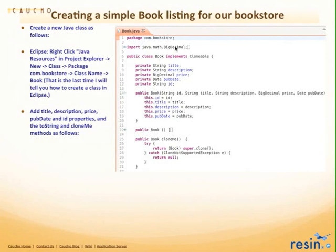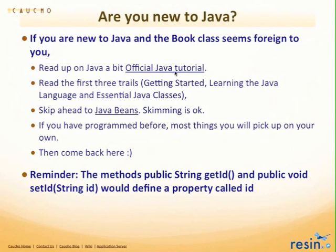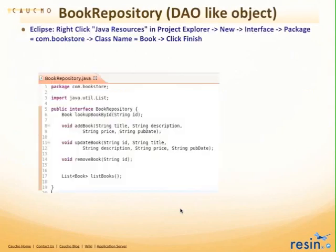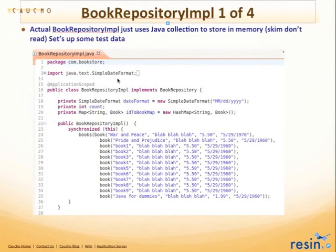We're creating a simple book listing for a bookstore. There are instructions in the slide deck showing how to create the first Java object. If you're not familiar with Java, you'll want to check out the official Java tutorial — there are links from the slide deck and the wiki. We define a repository interface as the main interface for accessing book objects from the database: lookup book, add book, update book, remove book, and list books.